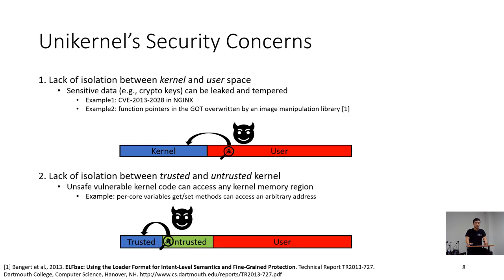Second, due to the lack of isolation between trusted and untrusted kernel, an attacker can exploit a vulnerability in the untrusted kernel code to access any kernel memory region. For example, per-core variables' get or set methods can access an arbitrary address in trusted kernel. We found this example in the kernel code of RustyHermit unikernel.